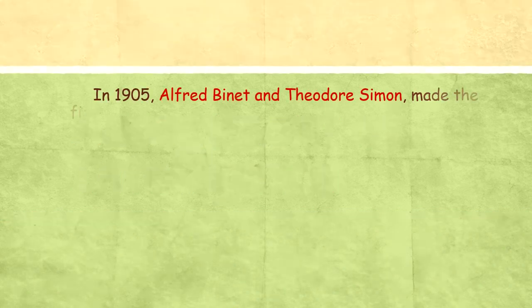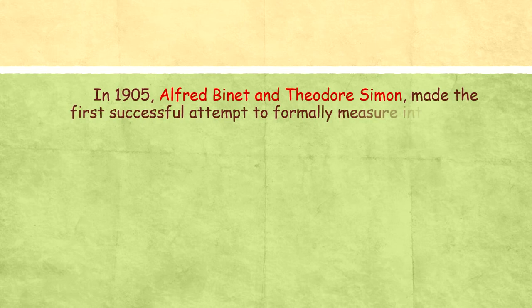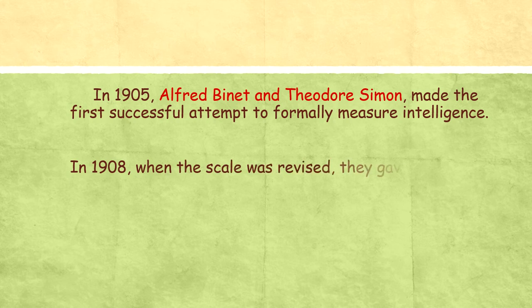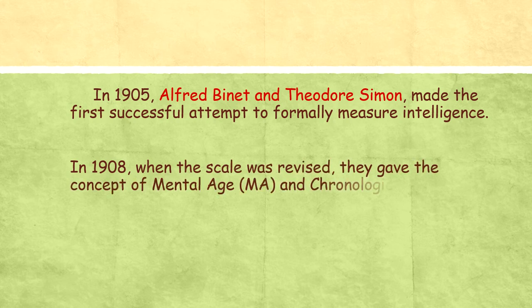In 1905, Alfred Binet and Throne Simon made the first successful attempt to formally measure intelligence. And in 1908, when the scale was revised, they gave the concept of mental age, called MA, and chronological age, CA.